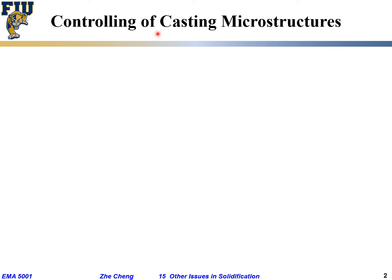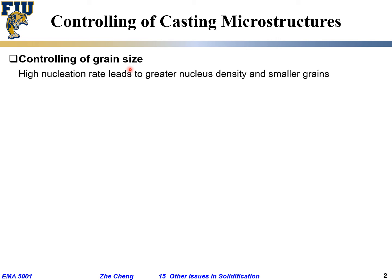Another thing we want to talk about is control of the casting microstructure. The first thing that comes to mind is control of grain size. Typically you want finer grain size, which gives higher hardness for metals as well as good toughness. A high nucleation rate gives greater nucleus density, meaning a greater number of individual nuclei for subsequent growth, and because we have a high number of nuclei the final grain size will be smaller.